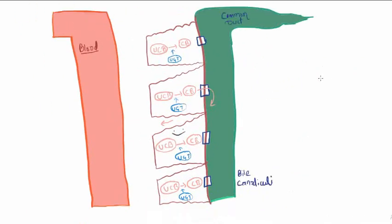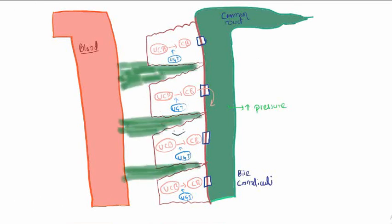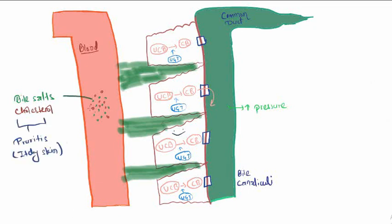Unconjugated bilirubin is converted into conjugated bilirubin by glucuronyl transferase. In atretic conditions, pressure increases and conjugated bilirubin, bile salts, and cholesterol go to the blood. Bile salts and cholesterol cause pruritus, itchy skin.